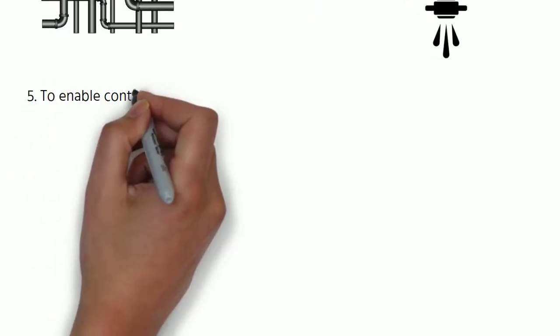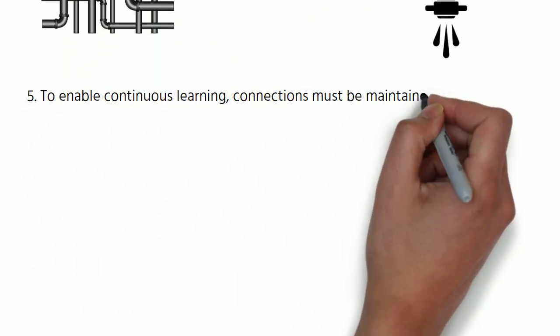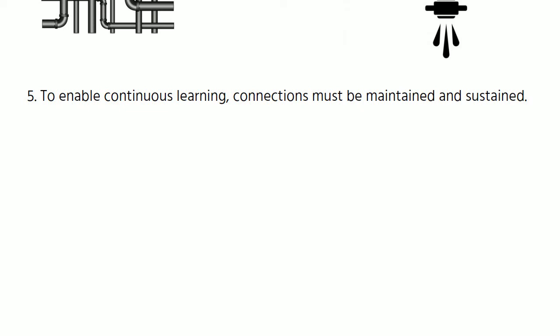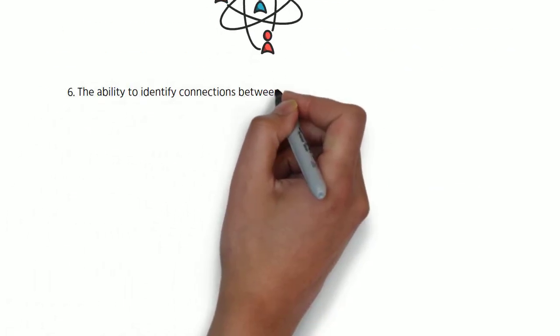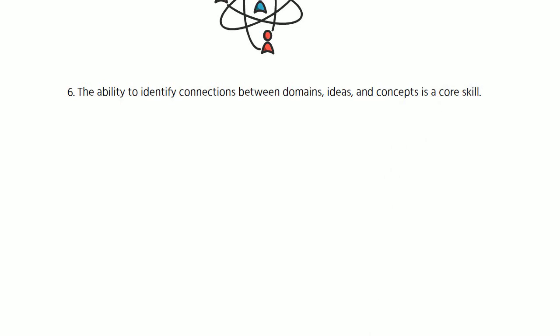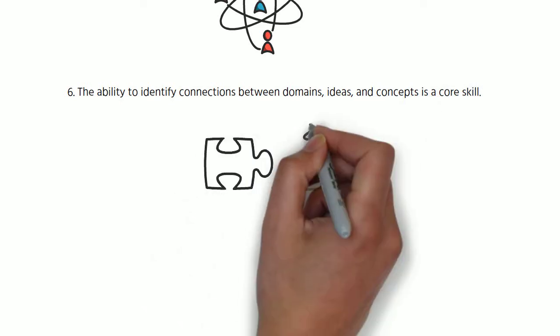Fifth, to enable continuous learning, connections must be maintained and sustained. And sixth, the ability to identify connections between domains, ideas and concepts is a core skill.